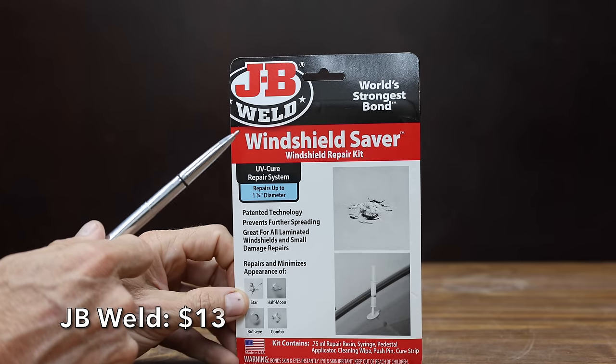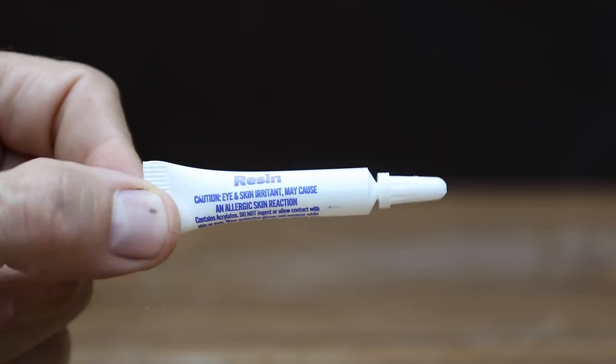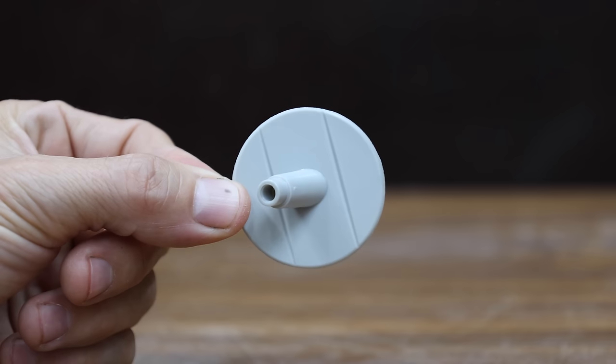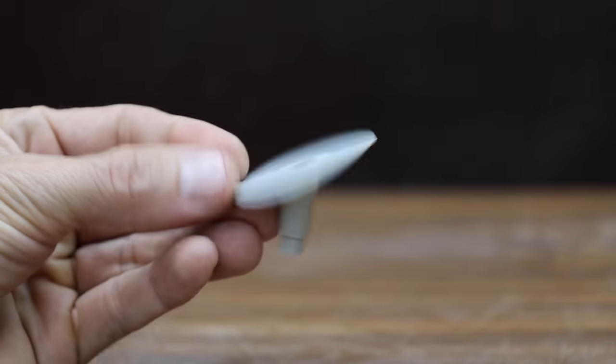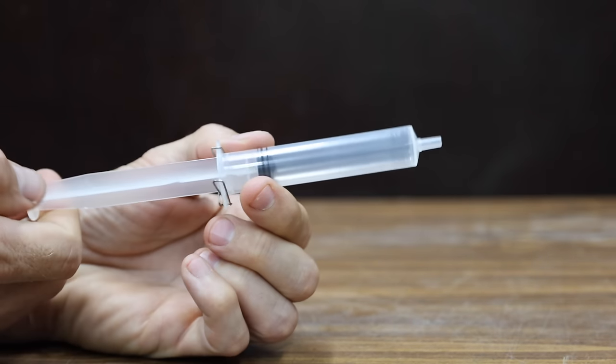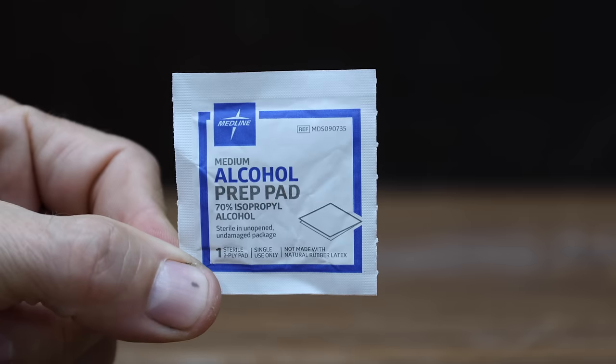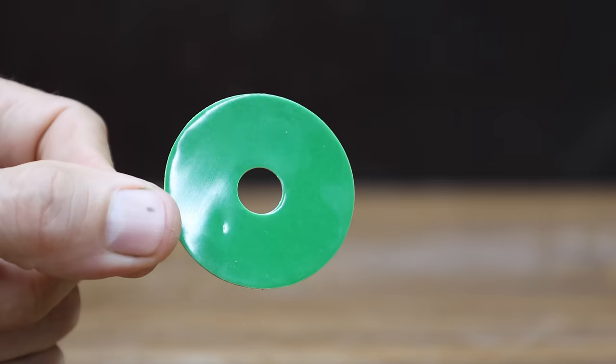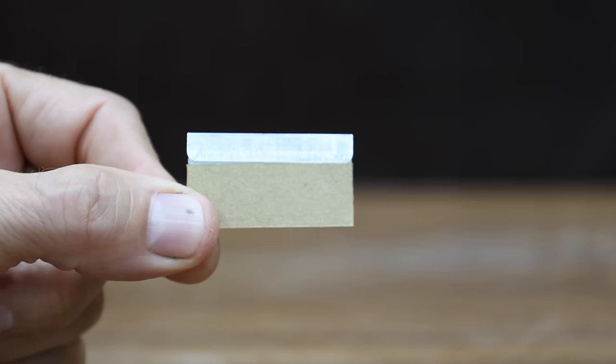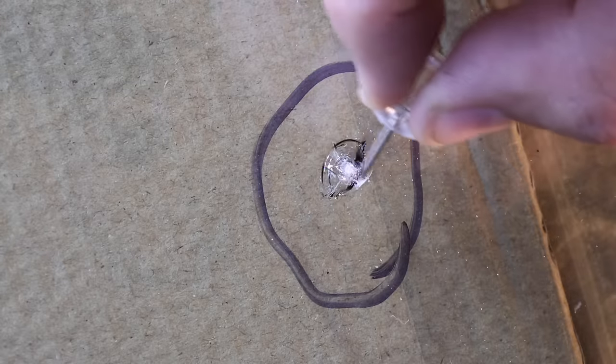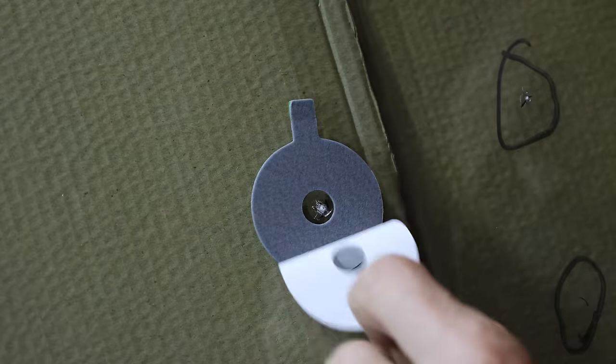At a price of $13 is this JB Weld brand. Contains 0.75 milliliters of repair resin. It claims to repair up to an inch and a quarter diameter. Repairs a star, a half moon, bullseye, and a combination of all the above. Also includes a syringe, pedestal applicator, cleaning wipe, pushpin, and cure strip. The JB Weld is made in USA. Compared to the instructions for the Antwish, the JB Weld's instructions are written in a way that's much more easy to follow.